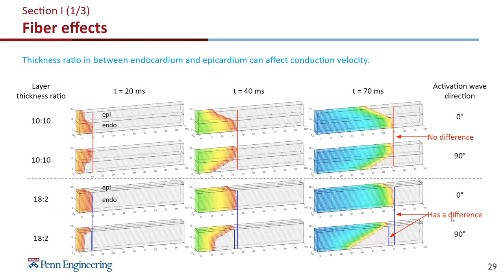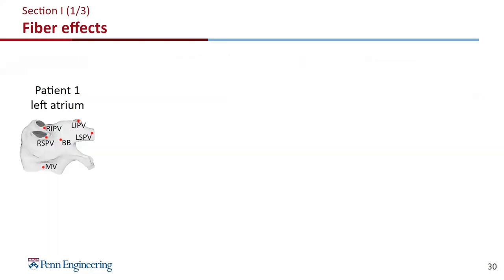We also find that the thickness ratio between the endocardium and epicardium can affect conduction velocity. When both layers have the same thickness, the activation wave lands in the same location. But if we have a much larger thickness in the endocardium than the epicardium, the activation waveform can be in different locations because they have different conduction speeds. So what we observe is that in an ideal slab tissue, fiber orientation could have a large effect on activation patterns. However, the left atrium is not a slab tissue — fiber organization in the left atrium is more complex.